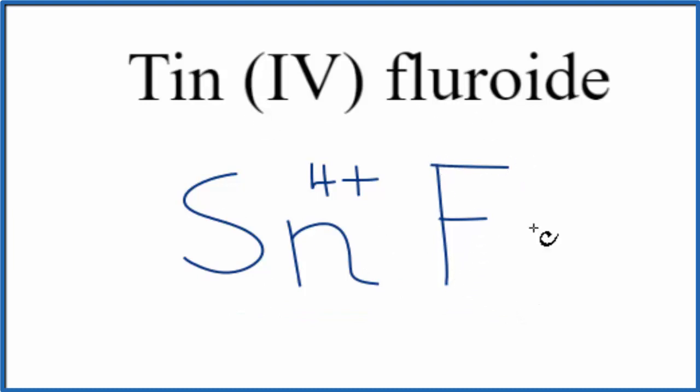Because we have an ionic compound, the charges need to balance out. We have a net charge of zero. Fluorine is in group 17, sometimes called 7A on the periodic table. It has a one minus ionic charge.